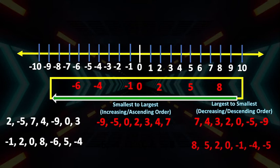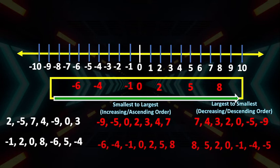And if we're going to arrange them in increasing or ascending order — meaning from smallest to largest — all you have to do is write the set of integers from left to right. Therefore, negative 6 is the smallest, negative 4, negative 1, 0, 2, positive 5, and positive 8.